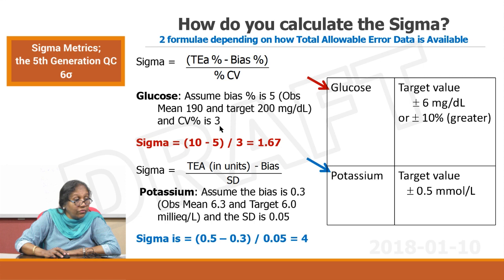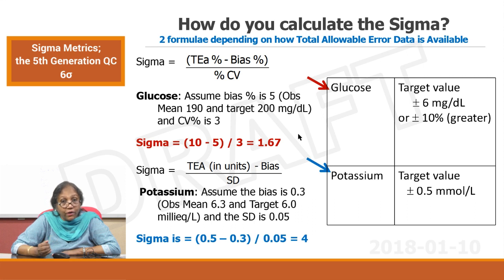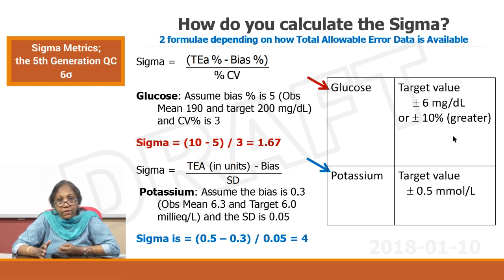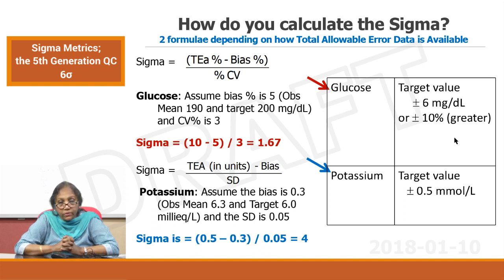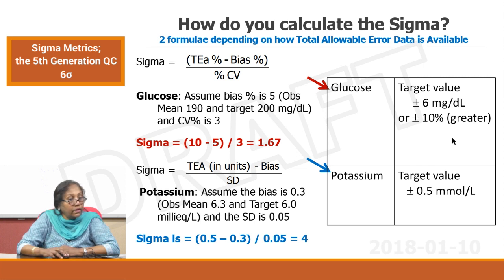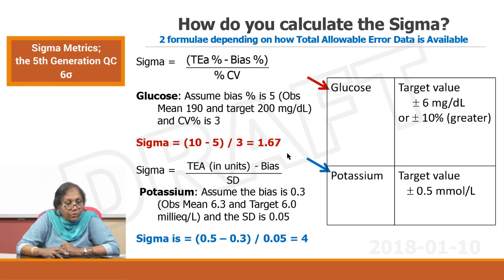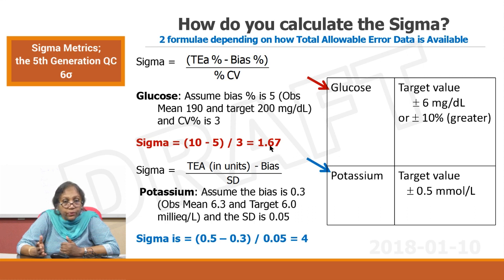1.67 sigma means making hundreds of thousands of mistakes per million operations — this is an unacceptable sigma. Look at the CV here: CV is good and the bias percent is also not too much, but that is enough for you to violate your acceptable ranges because you are going with the database that has been decided using the criticality of the parameter and using PT reports. CLIA has defined 10 percent as the total allowable error after a lot of research — if you use that and see your sigma, you should be having better quality in your laboratory.